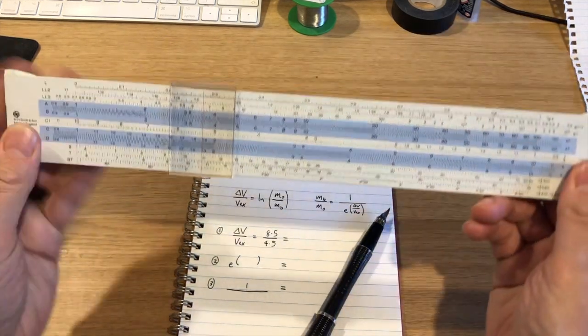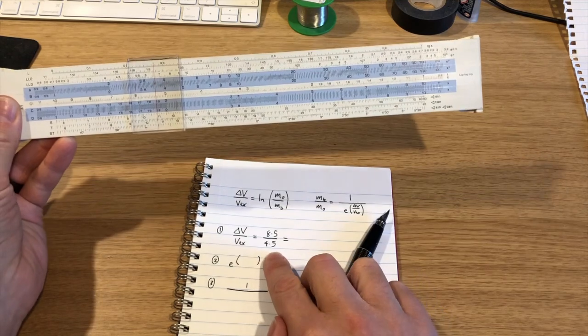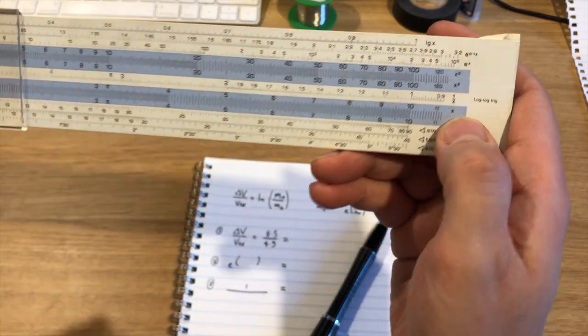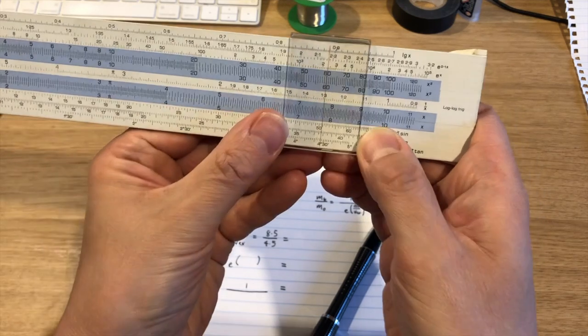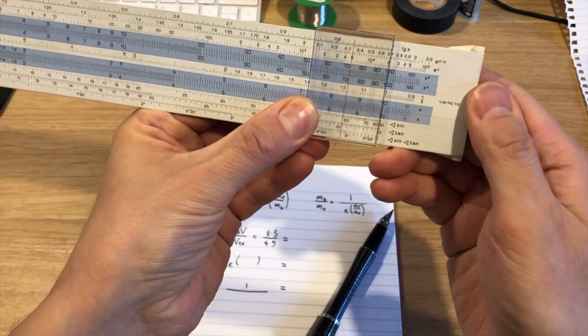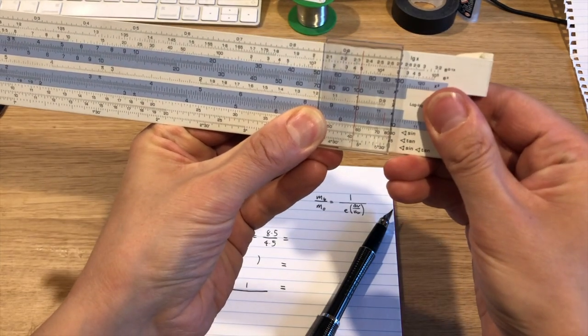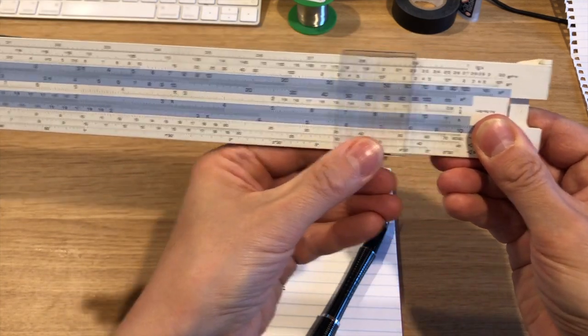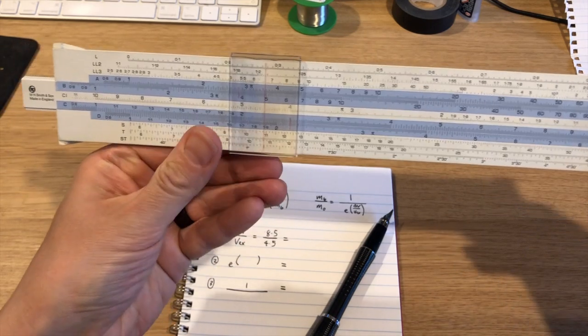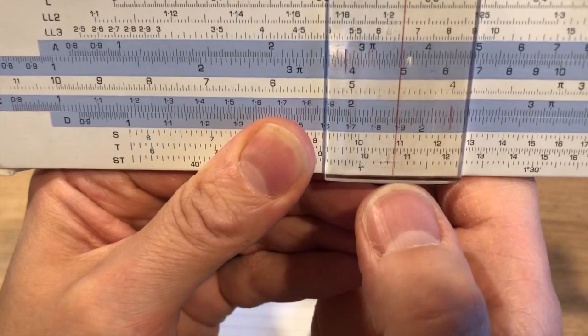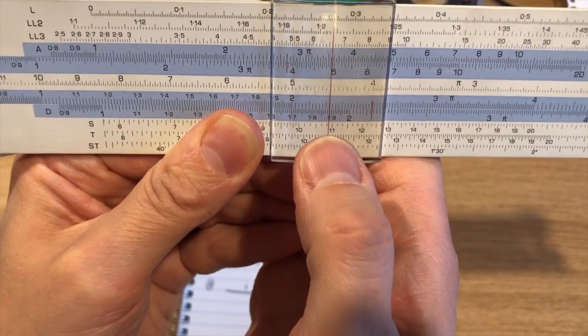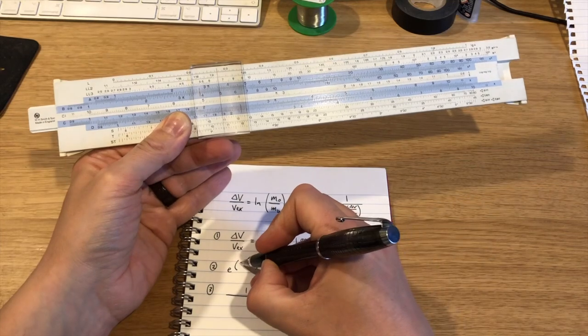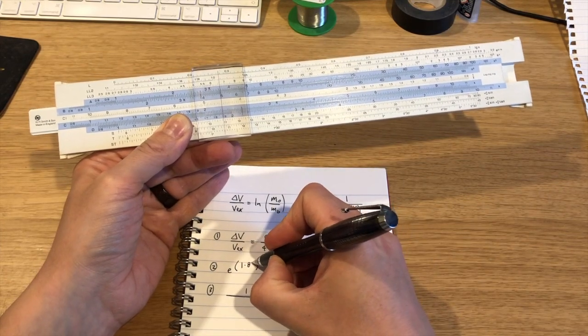So operation one. Operation one is 8.5 divided by 4.5. So we've got a division function here on our slide rule. So if I have 8.5 as my starting number, I can move the 1 on this slider here so that it's aligned with the 8.5. And now what I can do is I can move the slider down so that it's at 4.5. And if you look closely, what you'll see is that that corresponds to an answer of 1.89. So I fill that in for the next stage, 1.89. There we go.